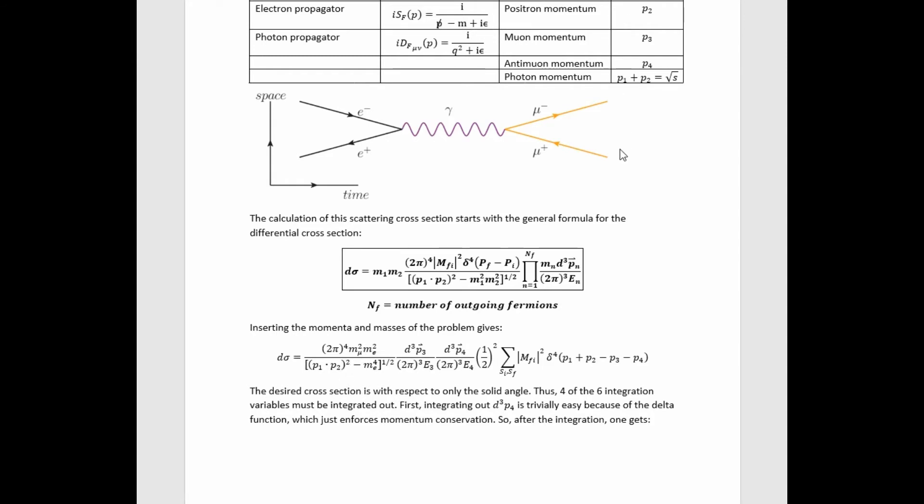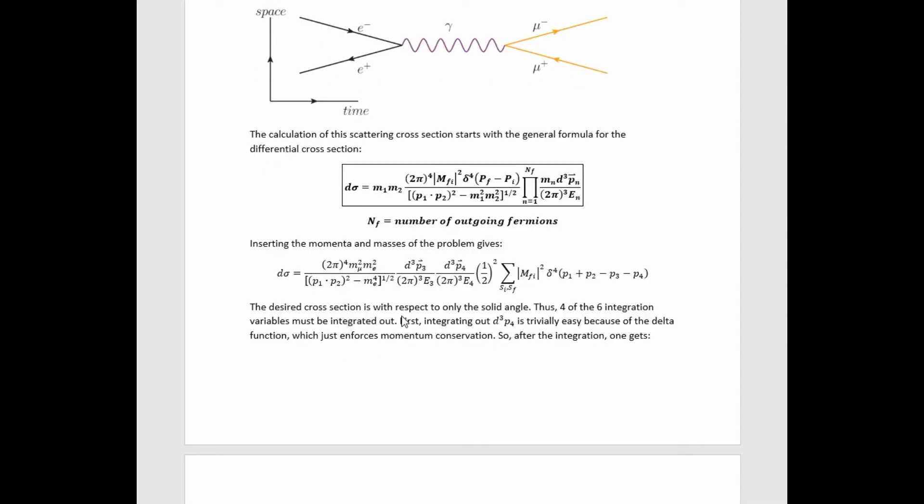We plug in the muon and electron masses and look up the momentum labels and then plug in the corresponding names. The desired cross-section is with respect to the solid angle of one of the outgoing muon-type particles, so the muon or the anti-muon.